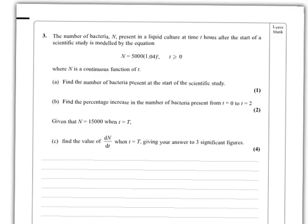This question starts with a standard problem: find the number of something present at the start when it's exponential growth. Basically, at the start means time equals zero, so we substitute t=0 into here. We get 5,000. The answer to part A is very straightforward, 5,000. It's only worth one mark.